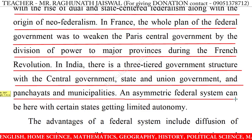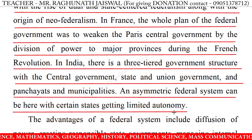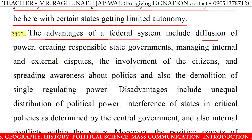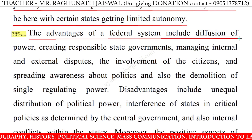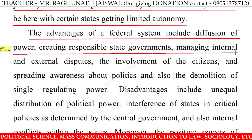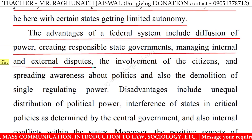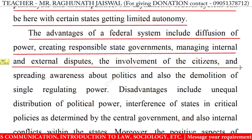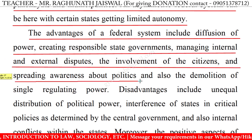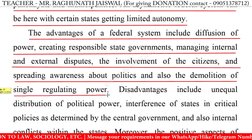An asymmetric federal system can be seen here, with certain states getting limited autonomy. The advantages of a federal system include diffusion of power, creating responsible state governments, managing internal and external disputes, the involvement of the citizens, and spreading awareness about politics, and also the demolition of single regulating power.